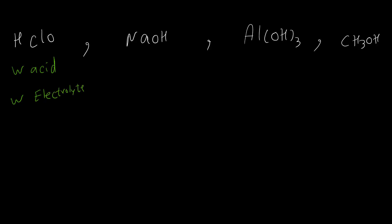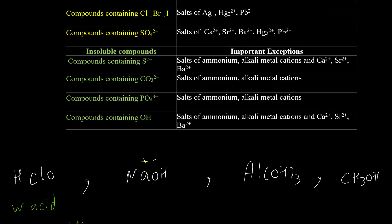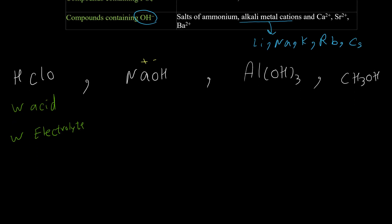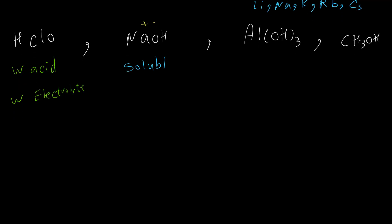For the second example, sodium hydroxide: it is a base and a strong base. Even if we didn't know it was a base, we know it is an ionic compound, and we can check the solubility chart. Hydroxide ions are mostly insoluble in water except for alkali metal cations — group one: lithium, sodium, potassium, rubidium, and cesium. Group one hydroxides are always soluble. So sodium hydroxide is a soluble ionic compound, making it a strong electrolyte.